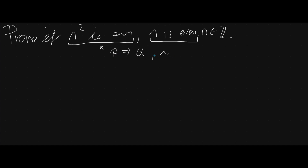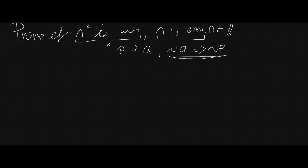We know that we can prove p implies q, and this is the same as proving not q implies not p. This is called the contrapositive, and that's what we're going to be using today. So taking the contrapositive — proof by contrapositive.